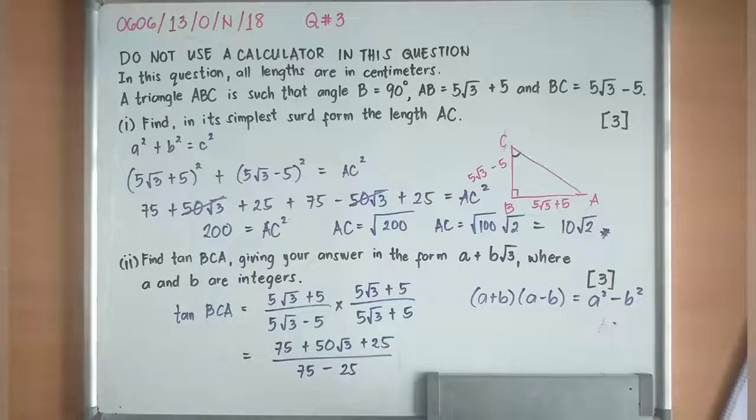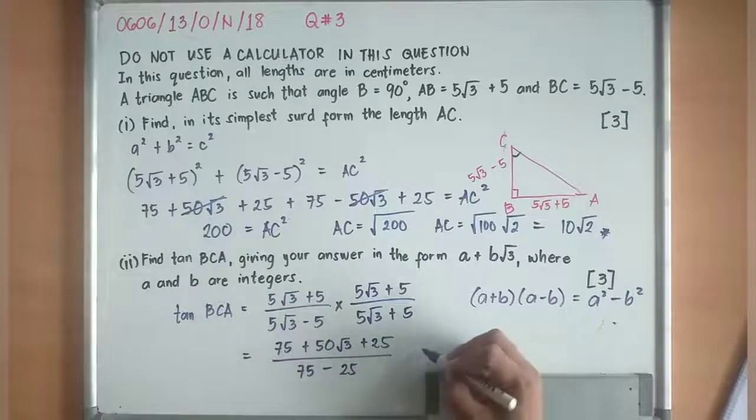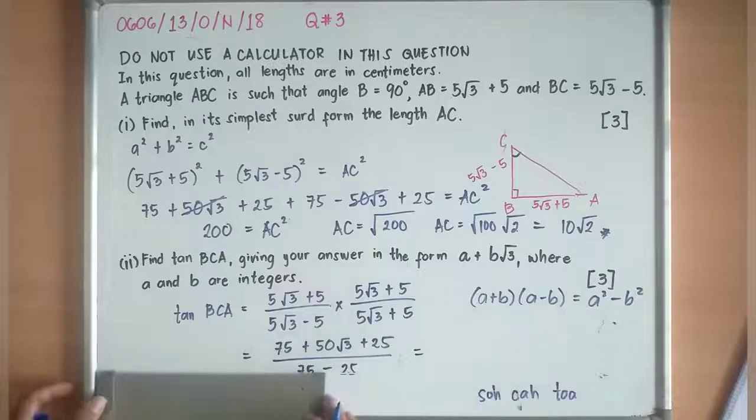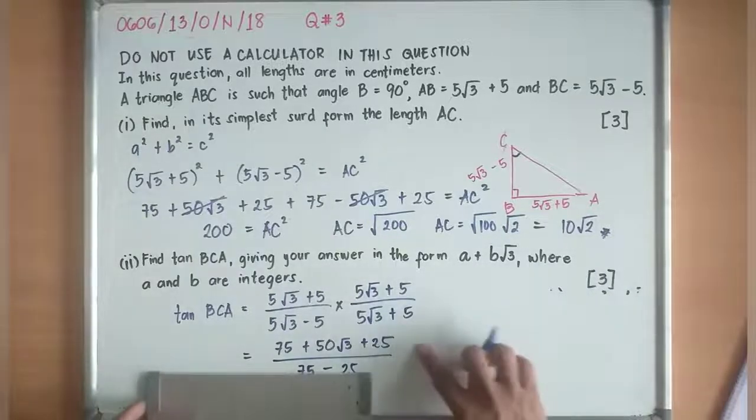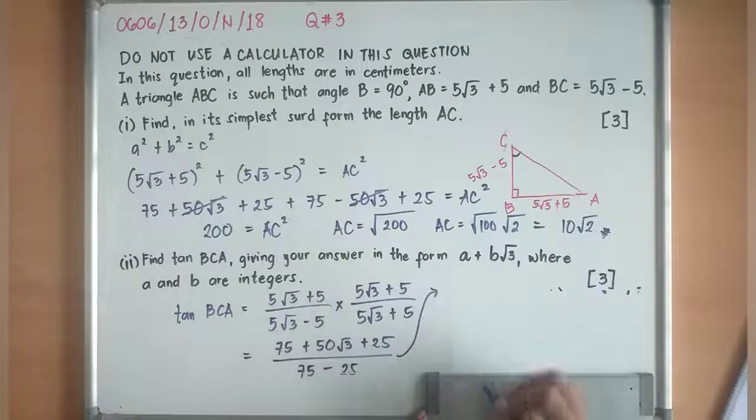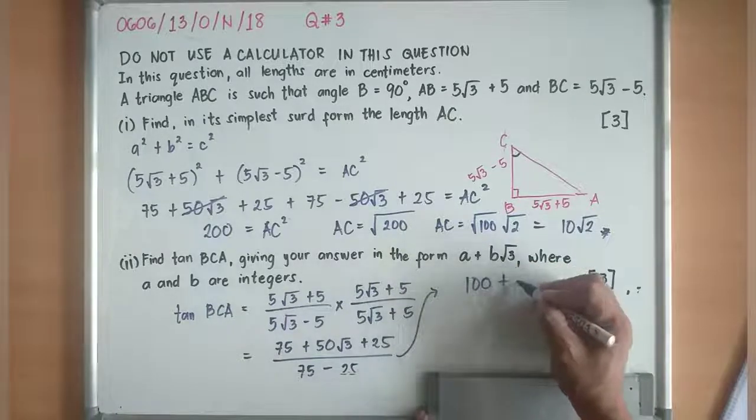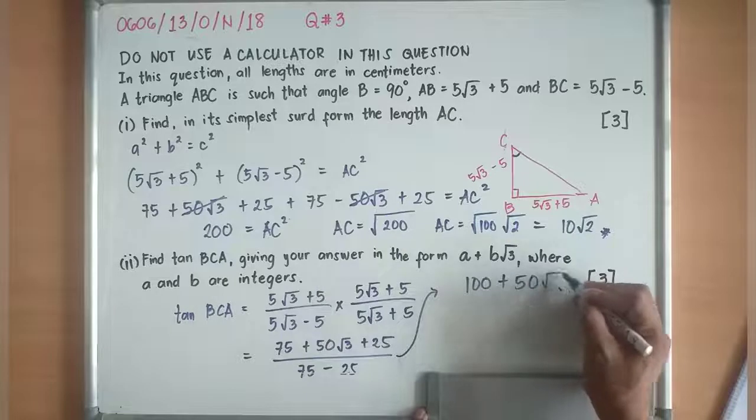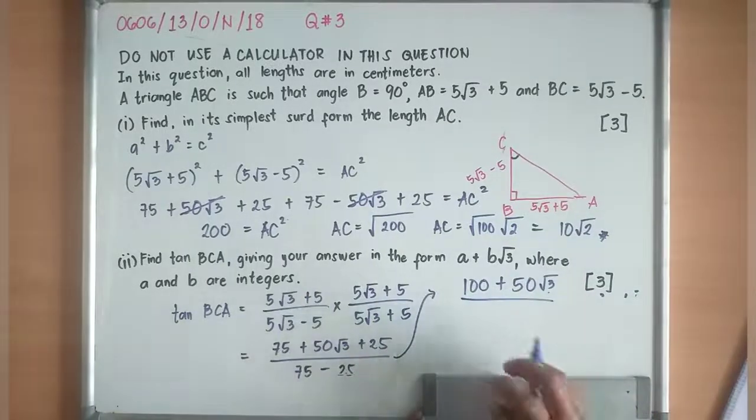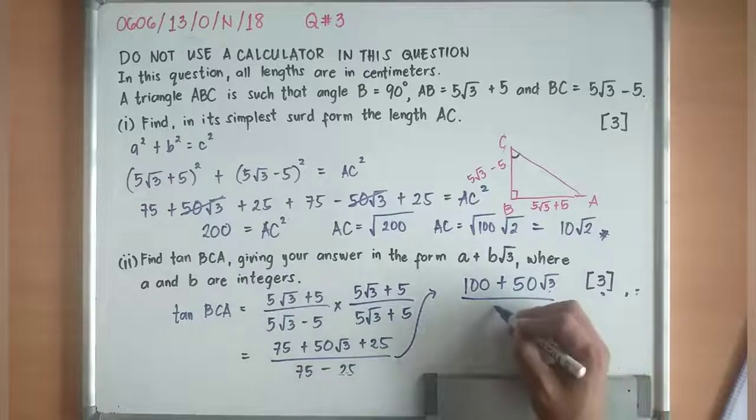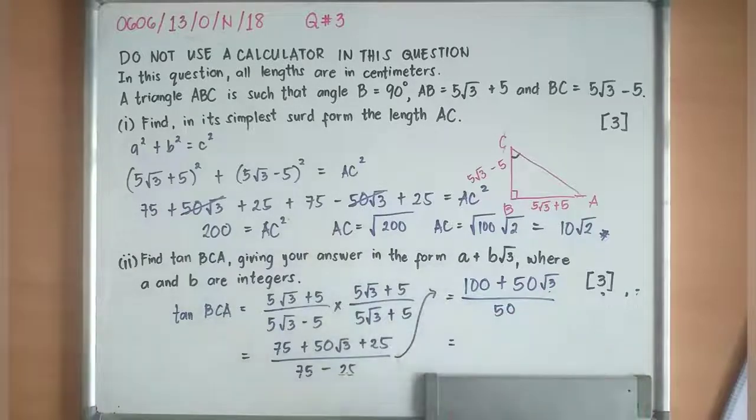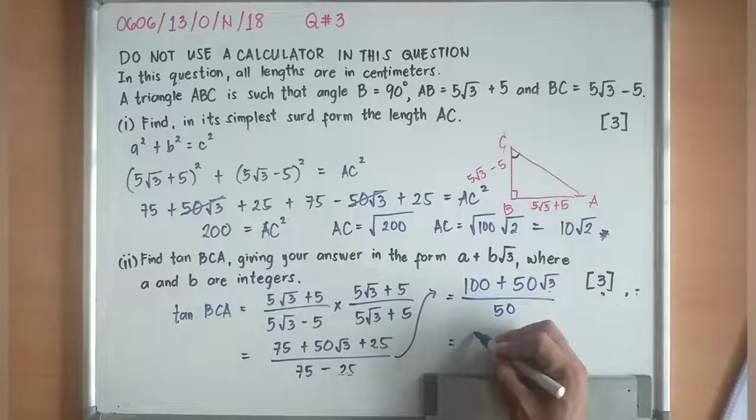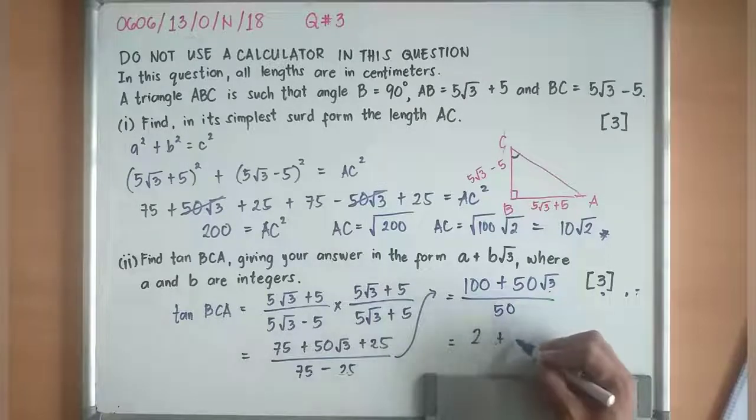75 plus 25 is 100, so I'll get 100 over there. I'll have 100 + 50√3 divided by 75 - 25 is 50. So definitely I'll get or the value of tangent BCA is 100 ÷ 50 is 2 + √3.